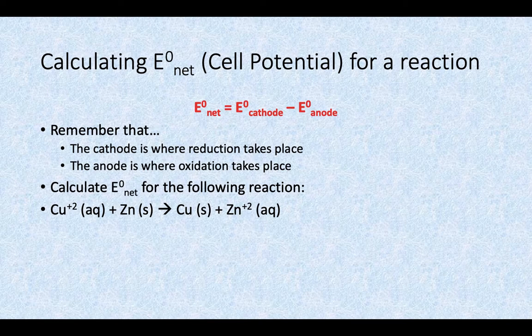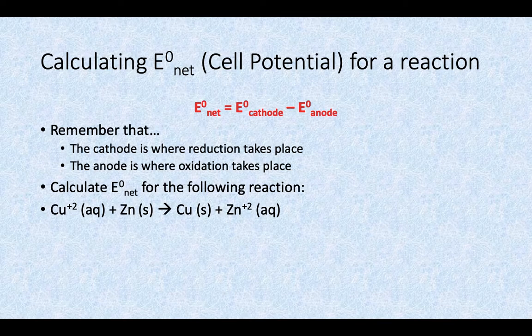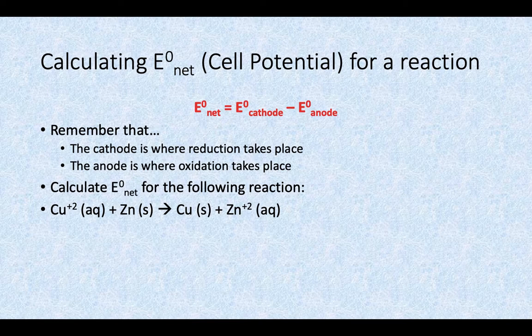The equation to get the overall net cell potential is you're going to do the cathode E cell potential value minus the anode cell potential value.